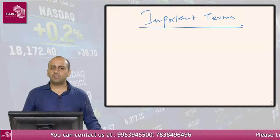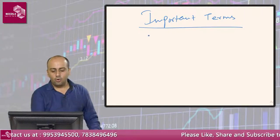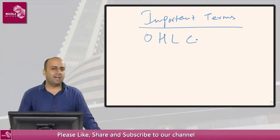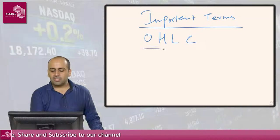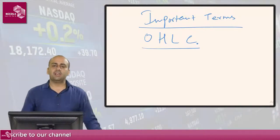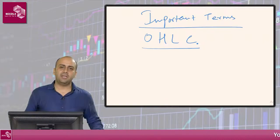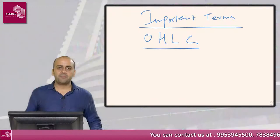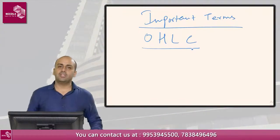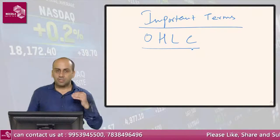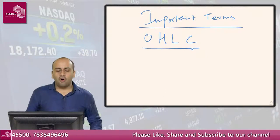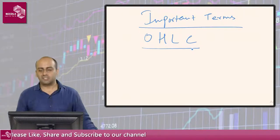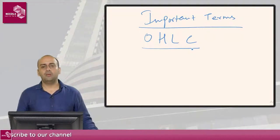The first and most important thing to study today is OHLC. OHLC stands for Open High Low Close. If there is any share or stock, there are 4 prices in one day: open price, closing price, the highest price, and the lowest price. So OHLC stands for Open High Low Close.